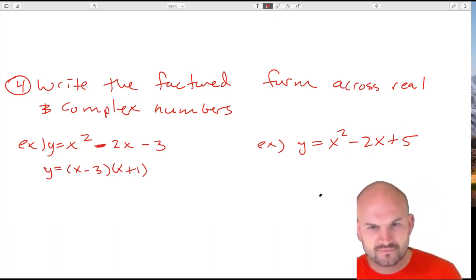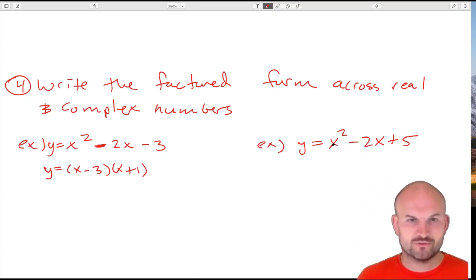Now the second example, we can see that this is non-factorable across real numbers. So we want to be able to figure out what the irrational or complex numbers are going to be that we can write this as a product.